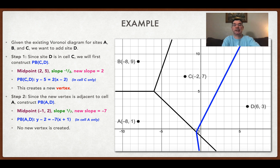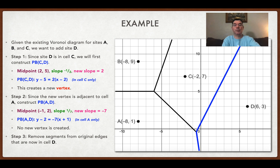Now you'll see that there's part of an edge between cells A and C that I don't need anymore — that's the part that is in the new cell that has site D in it. So I'm just going to remove that part of that edge. Now I've created a new cell with site D in it so that every point in that cell is closer to site D than it is to the other three.